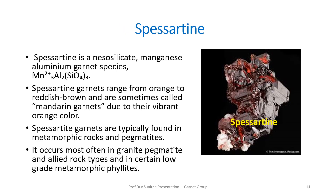Spessartine is a nesosilicate and a manganese aluminum garnet. Spessartine garnets range from orange to reddish brown and are sometimes called mandarin garnets due to their vibrant orange color. They are typically found in metamorphic rocks like pegmatites, as well as in granite pegmatites and low-grade metamorphic phyllites.